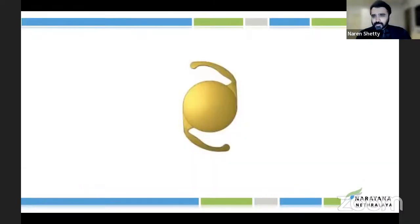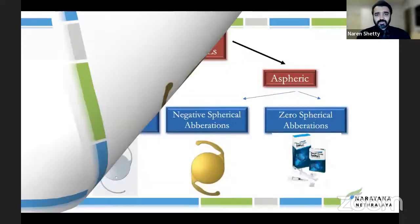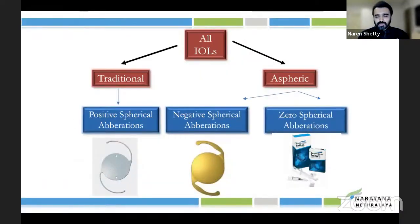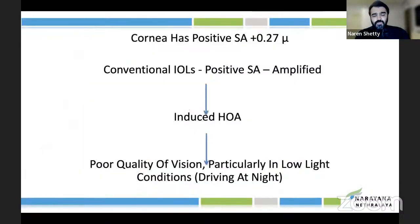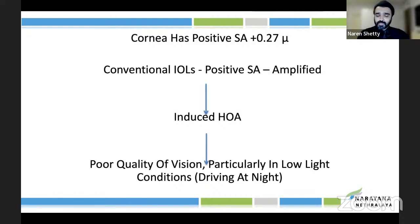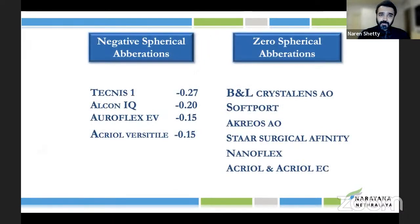When we look at just monofocal lenses — not premium lenses — we have traditional and aspheric. Traditional lenses have positive spherical aberrations, while aspheric lenses have either zero or negative spherical aberration. The cornea has positive spherical aberration, and the conventional lens also has positive spherical aberration, which amplifies it and creates a lot of high-order aberrations, leading to poor vision especially at night. The aspheric lenses come in negative and zero variants.